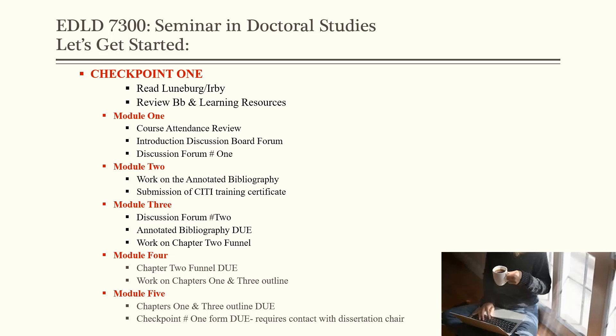Module 1: your course attendance review, your introduction discussion board, and Discussion Forum 1. Module 2: work on the annotated bibliography and submission of your CITI training certificate. If you have not done CITI training prior to this course, you will need to complete the training before you can submit your completion certificate. Module 3: Discussion Forum 2 is due, and the annotated bibliography is due — at the same time you are working on your Chapter 2 funnel. Module 4: your Chapter 2 funnel is due, and you'll be working on the Chapters 1 and 3 outline. Module 5: the Chapters 1 and 3 outline is due, as well as your Checkpoint 1 form — your documentation that you have had a minimum of one contact with your dissertation chair.